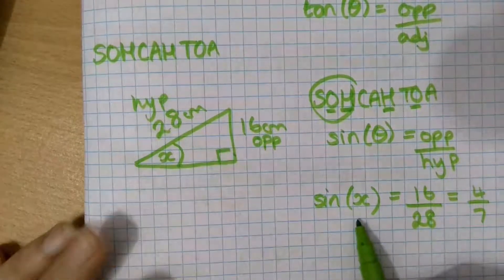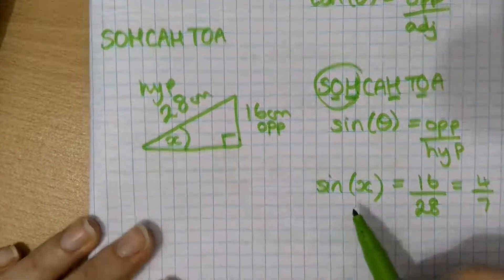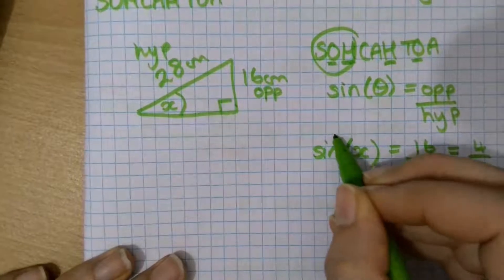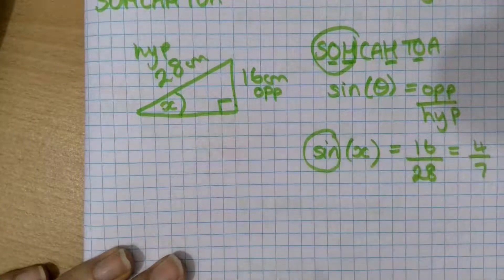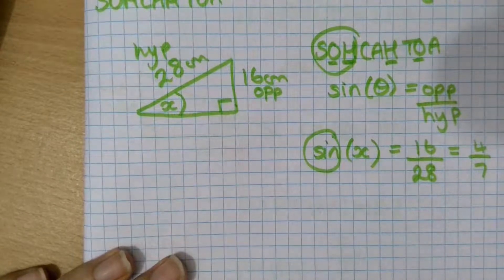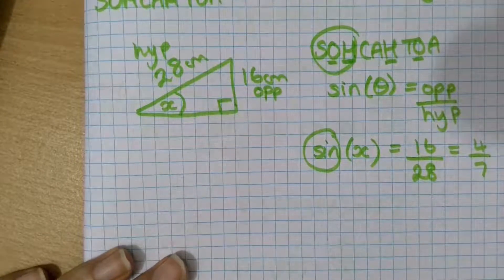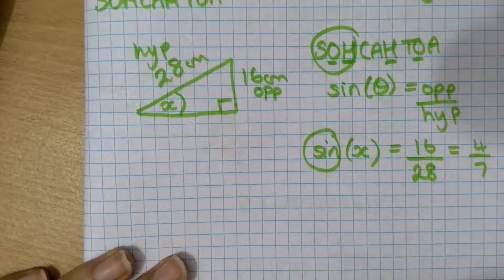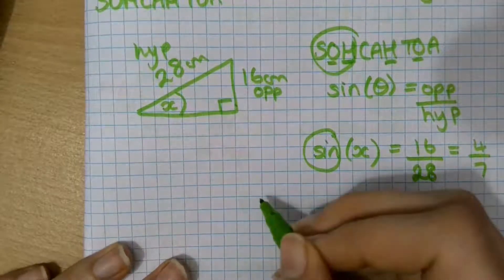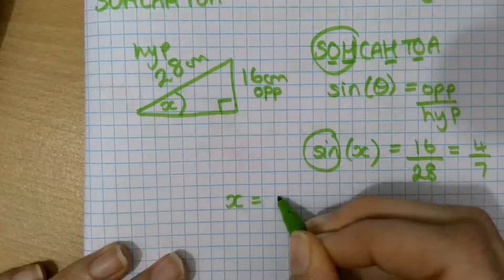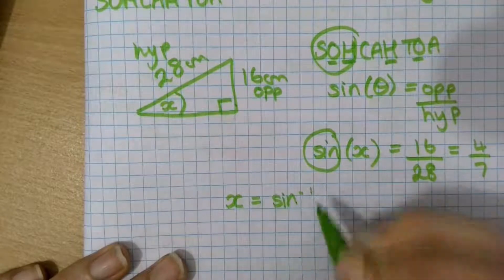Now, we want to know what x is. Currently, we don't know what x is. We know what sine x is. So we need to remove the function of sine. And to remove a function, we do the inverse function. The inverse of sine is sine inverse. Bet you couldn't see that one coming. And it's found on your calculator by pressing shift and sine. It's recorded on paper as using sine with a little negative one. So it looks like sine to the power of minus one.